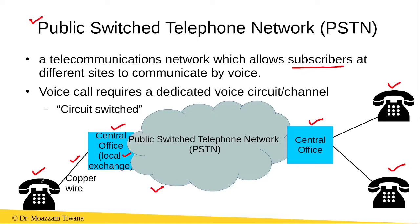Suppose this telephone wants to establish a voice call with another telephone. To establish this voice call, first the fixed telephony network or PSTN network would establish a dedicated path between these two telephones. This dedicated path is also called the voice circuit or the voice channel, and using this channel, bi-directional voice communication takes place between the two telephones. Since a dedicated circuit is first established for this voice communication, we also call these networks circuit-switched networks.